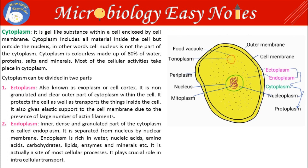First is Cytoplasm. It is a gel-like substance within a cell enclosed by the cell membrane. Cytoplasm includes all material inside the cell but outside the nucleus. In other words, the cell nucleus is not part of the cytoplasm. Cytoplasm is colourless, made up of 80% water, proteins, salts and minerals. Most of the cellular activities take place in the cytoplasm.